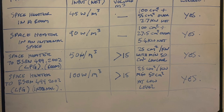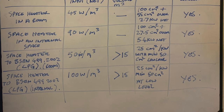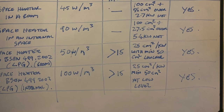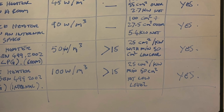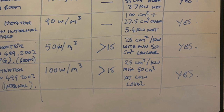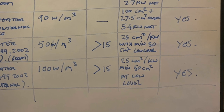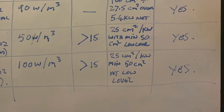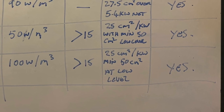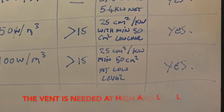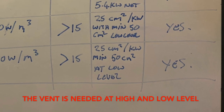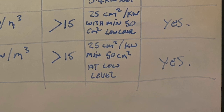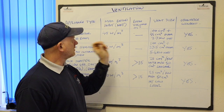For space heaters to BS EN 499:2002 — again LPG — in an internal space, it's 100 watts per metres cubed, the room volume must be greater than 50 metres cubed, and again it's 25 centimetres squared per kilowatt with a minimum of 50 centimetres squared at high and low level, plus an openable window. That's what we need to be working to for ventilation.